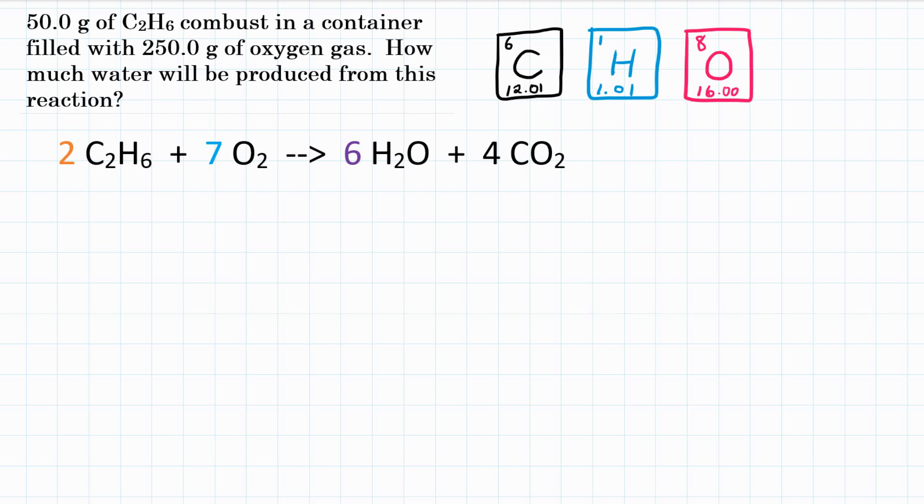So this is a limiting reactant stoichiometry problem because we were given both amounts of our reactants. We were given 50.0 grams of C2H6 and also 250 grams of oxygen gas. So let's set up our stoichiometry problems with those amounts, calculate, and whichever one is less is what we'll actually get.